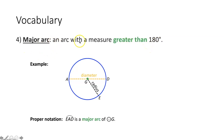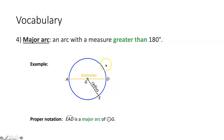A major arc would be an arc with a measure greater than 180 degrees. Again, there are 360 degrees in a circle, meaning there are 180 degrees in a semicircle. So if you have an arc greater than a semicircle — for instance, arc EAD here — that would be considered a major arc. Note that arc EAD has three letters in it, three points, because it's telling you which point to start at, which point to go through, and then which point to end at.